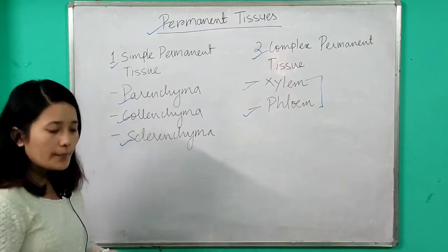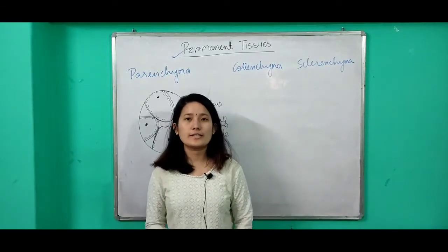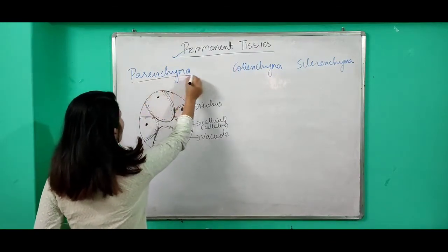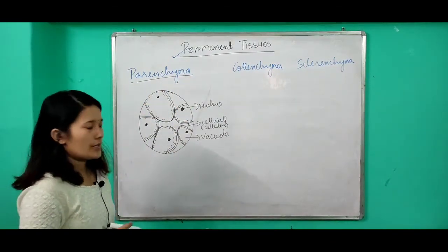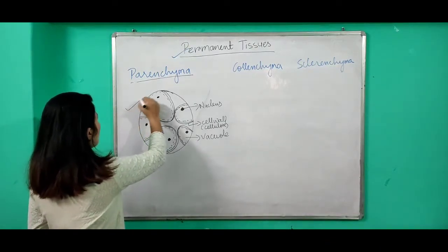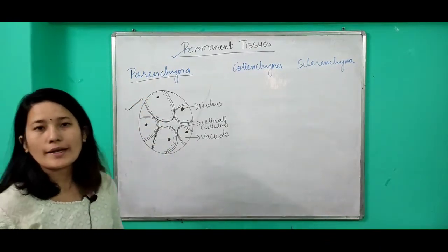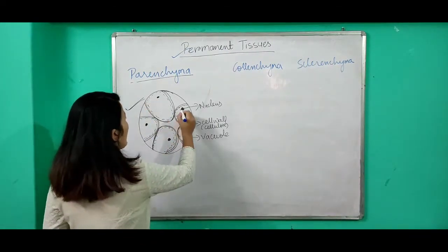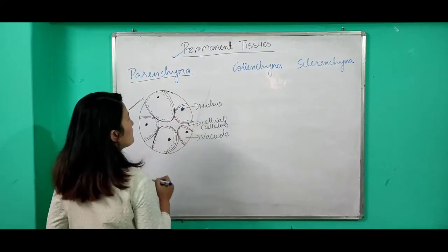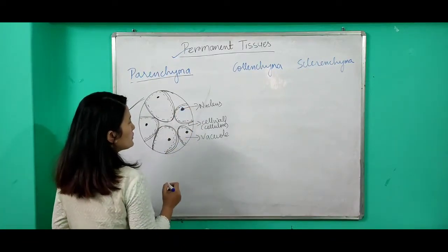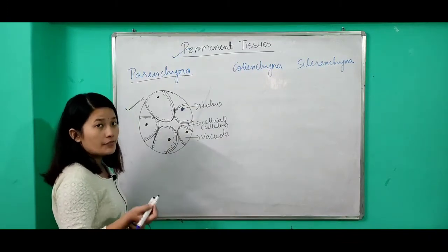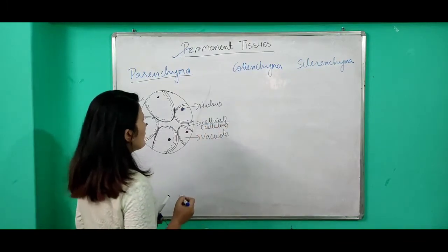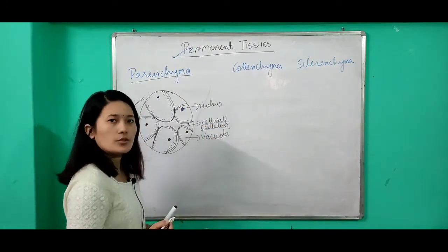First, let us discuss the structure of parenchyma. If you look at parenchyma cells under the microscope, you can observe that they are larger in size and have a prominent nucleus. They have large vacuoles and are filled with cytoplasm, which means they are living in nature. The cell wall of parenchyma cells is made up of cellulose.